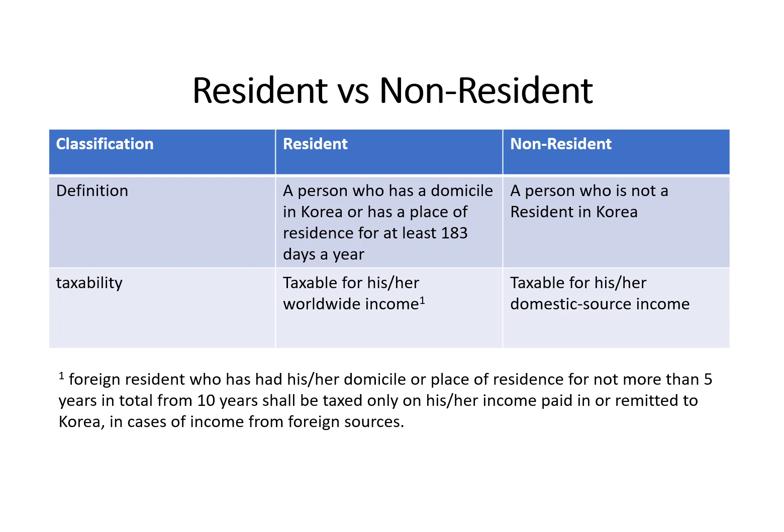Domestic here means Korea source. A foreign resident who has had his or her domicile or place of residence for not more than 5 years in total from 10 years shall be taxed only on income paid in or remitted to Korea in cases of income from foreign sources. This means that an expatriate working in Korea for 4 years, for example, who has foreign source income in his own country like the UK — if that income is not paid in or remitted to Korea, it will not constitute Korea taxable income.